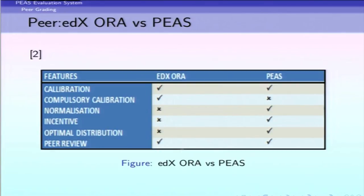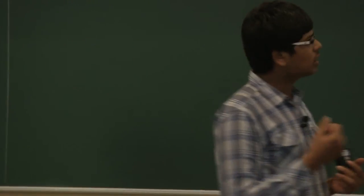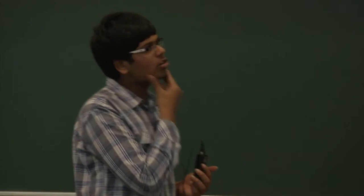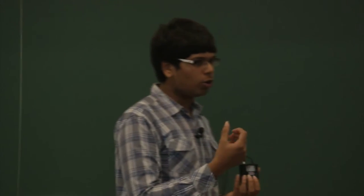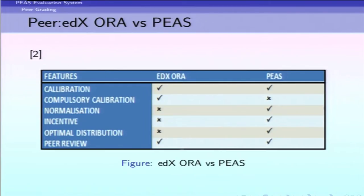Comparing edX ORA with PEES: both provide a calibration mechanism, but ORA has compulsory calibration while PEES gives flexibility to the instructor to choose a calibration model. ORA's calibration only teaches how to calibrate, whereas PEES additionally uses the calibration score to achieve an optimal distribution of evaluators. Also, in ORA there is a bug where if a student fails the calibration test six times, they are still promoted to peer grading regardless of score — which doesn't help if students just click through.